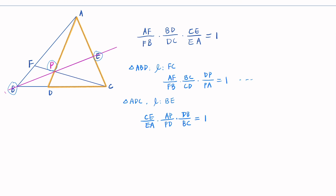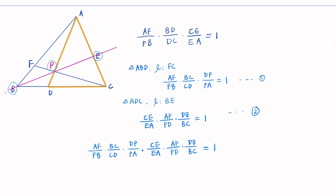Now we try another triangle. Consider triangle ADC, and the transversal line is BE. Applying Menelaus' theorem, the three intersection points would be E, P, and B. So we have CE over EA times AP over PD times DB over BC equal to 1. Let's multiply equation 1 and equation 2: PA cancels with AP, PD and DB terms cancel, BC also cancels. Remaining is AF over FB times BD over DC times CE over EA equal to 1. That's the second proof.